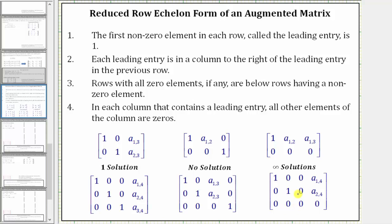In each of these matrices, the first nonzero element in each row, called the leading entry, is one. Each leading entry, or one, is in a column to the right of the leading entry in the previous row. Rows with all zero elements, if any, are below rows having a nonzero element.